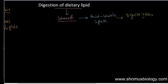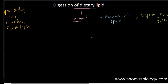This acid-stable lipase can digest the triacylglycerols, also known as TAGs. In most cases these TAGs are found in milk, so if you drink milk this process of fat digestion begins in the stomach.